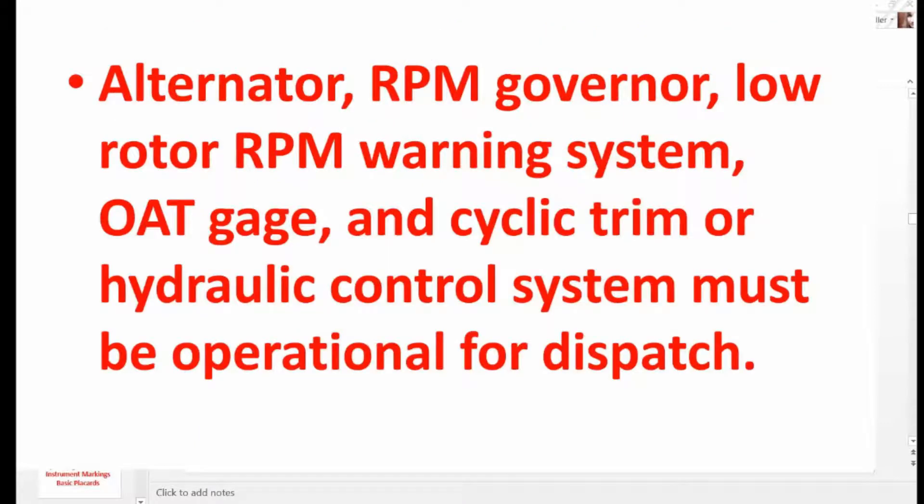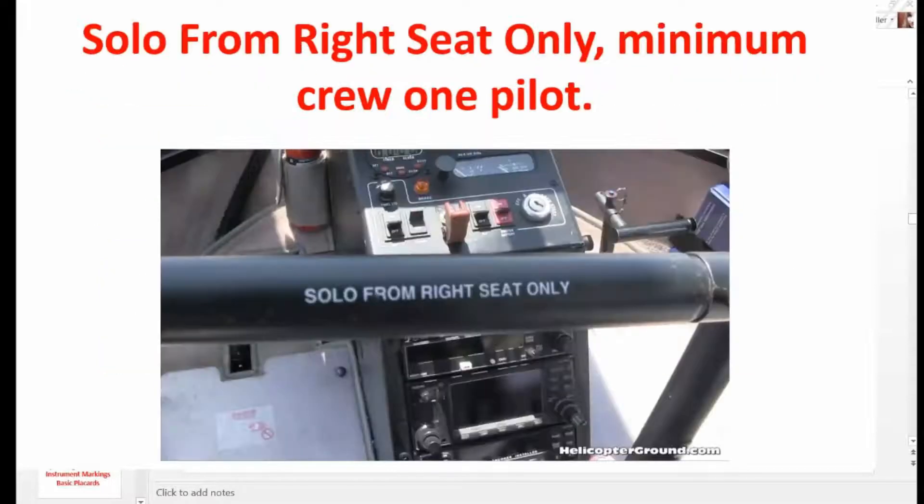Alternator, RPM governor, low rotor RPM warning system, OAT gauge, and cyclic trim or hydraulic control system must be operational for dispatch. Solo from right seat only. Minimum crew, one pilot.